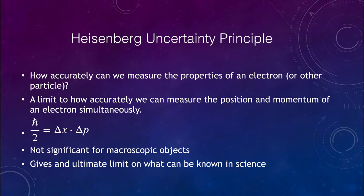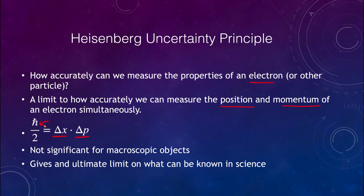The next thing we want to talk about is the uncertainty principle given by Heisenberg. It discusses how accurately we can measure the properties of an electron or any other particle. There is a limit to how accurately you can know the position and the momentum of an electron simultaneously. The error in position determination and the error in momentum determination are bounded by h-bar over two. For macroscopic objects this is not very significant — we can essentially measure them accurately because the number is so small.